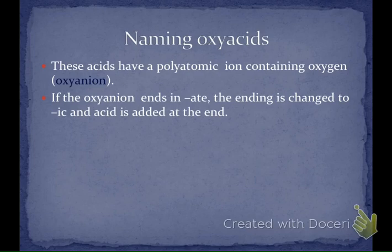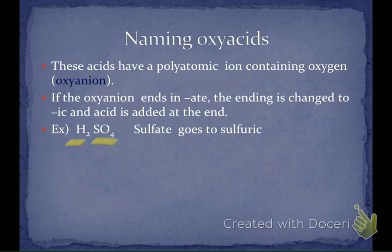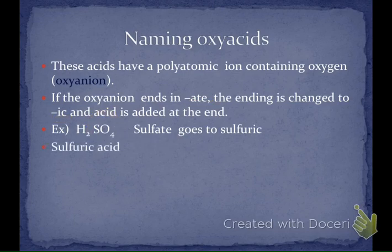We're going to look at the name of the oxyanion. If it ends in '-ate' — like sulfate, carbonate, arsenate — we change the ending to '-ic' and add the word 'acid.' For example, H2SO4 is an acid because hydrogen is in the first position. It's not binary because after the hydrogen I see sulfur and oxygen. I ignore the hydrogen, look up the polyatomic ion: SO4 is sulfate. Sulfate ends in '-ate,' so we change it to '-ic' and get sulfuric acid.